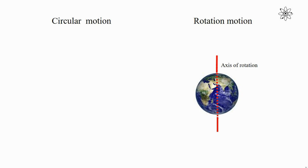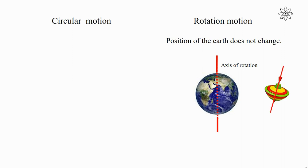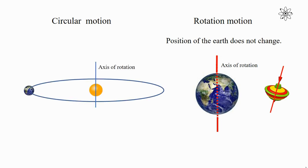In the rotational motion of the earth, the position of the earth does not change. To visualize this, let's consider the spinning motion of a top. When the top spins, it doesn't change its position. Similarly, the spinning or rotational motion of the earth does not change its position. But we know the earth changes its position in space, and this happens because of circular motion. In the circular motion of the earth, the earth changes its position.